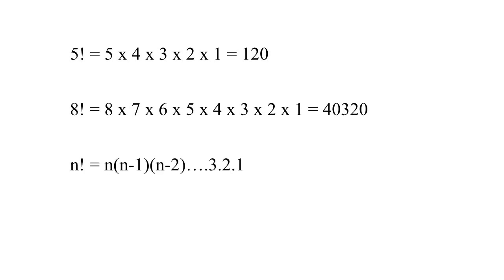In general, for any natural number n, n factorial is equal to n into n minus 1 into n minus 2 and the numbers keep on decreasing until we reach 1.